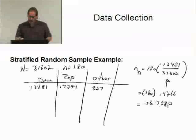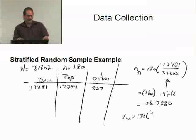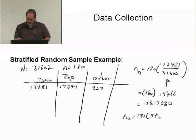Similarly, for the Republicans, N sub R is going to equal 180 times, when I look at the ratio for the Republicans, 17,294 divided by the 31,602. That's 54%, so .5472. That gives me a number of 98.4960.